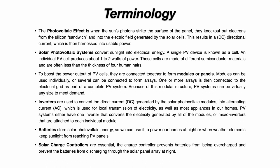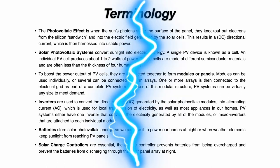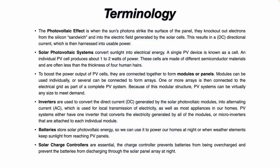Inverters are used to convert the direct current generated by the solar photovoltaic modules into alternating current, AC, which is used for local transmission of electricity, as well as most appliances in our homes and businesses. PV systems either have one inverter that converts the electricity generated by all the modules, or micro-inverters that are attached to each individual module.